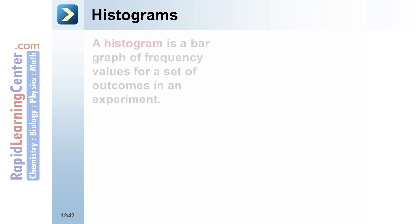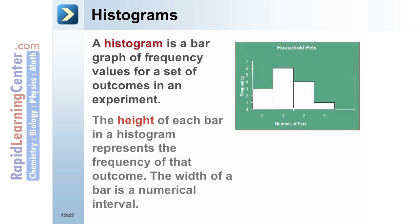Histograms: a histogram is a bar graph of frequency values for a set of outcomes in an experiment. The height of each bar in a histogram represents the frequency of that outcome. For example, a histogram can be used to show the number of household pets students in a class have.